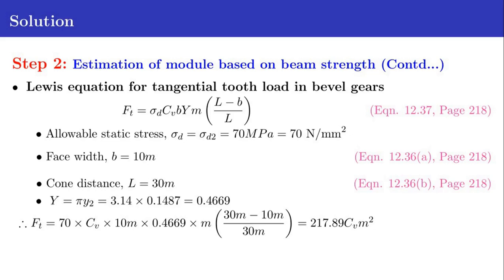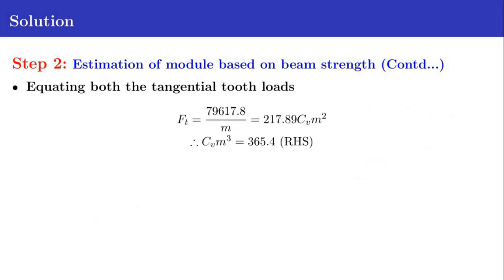Substituting the values in the equation for FT, we get FT in terms of CV and M as 217.89 CV M squared. Now we equate both tangential tooth loads: FT equals 79,617.8 divided by M equals 217.89 CV M squared.